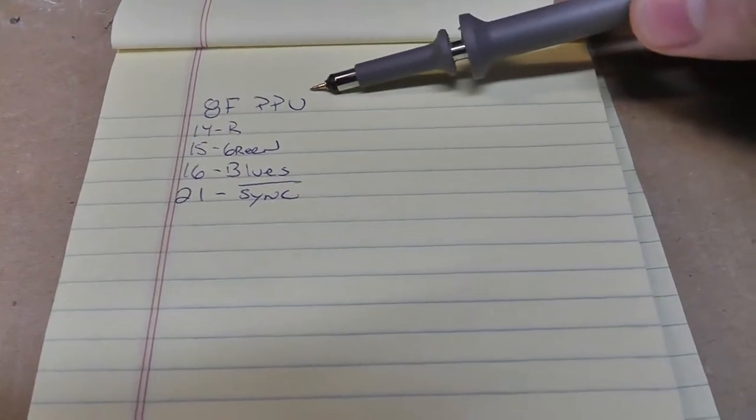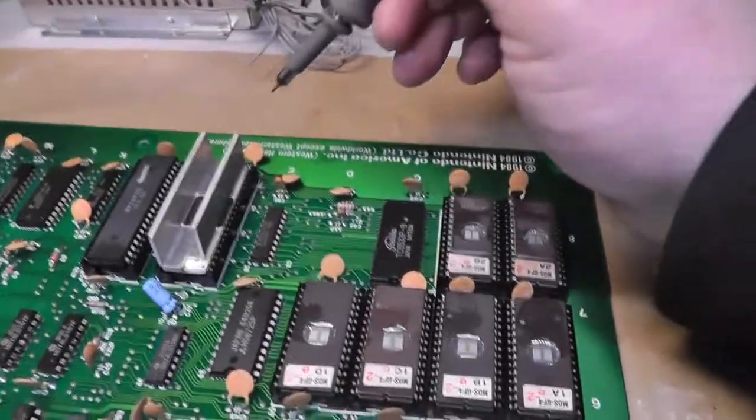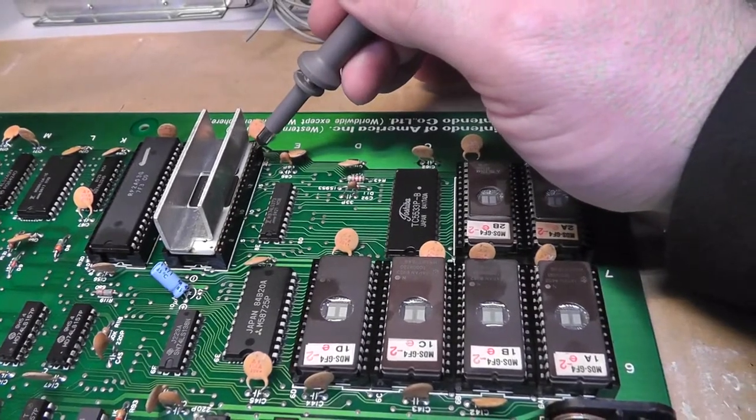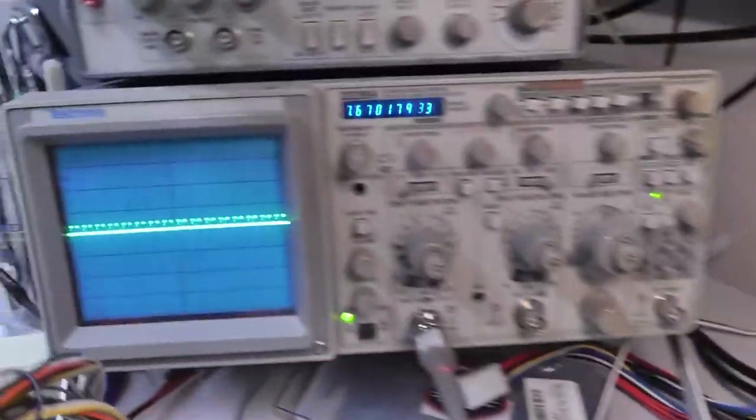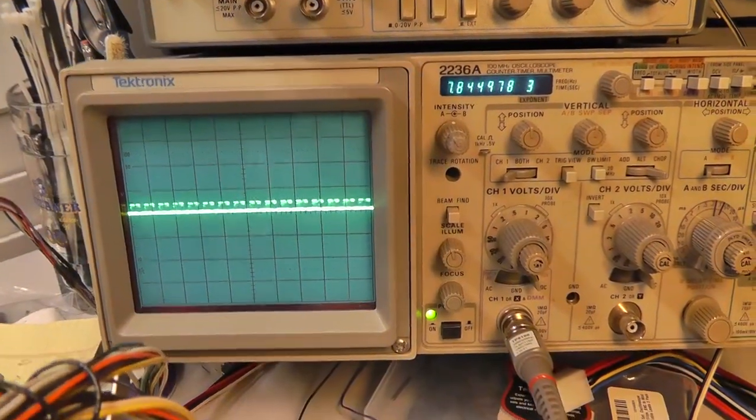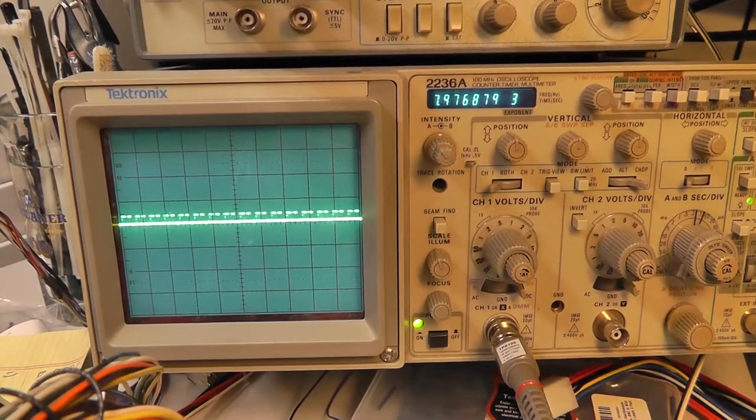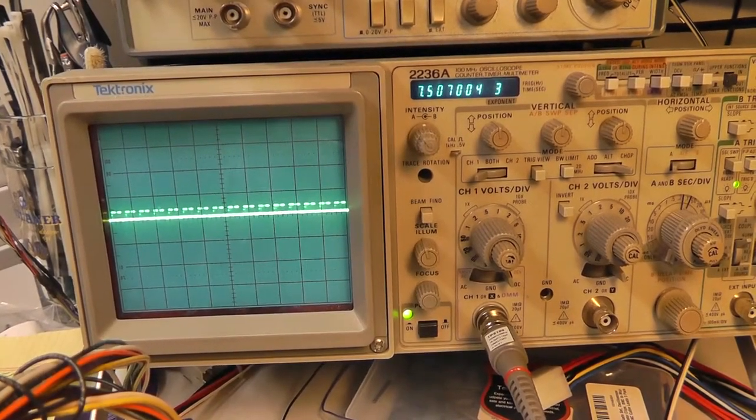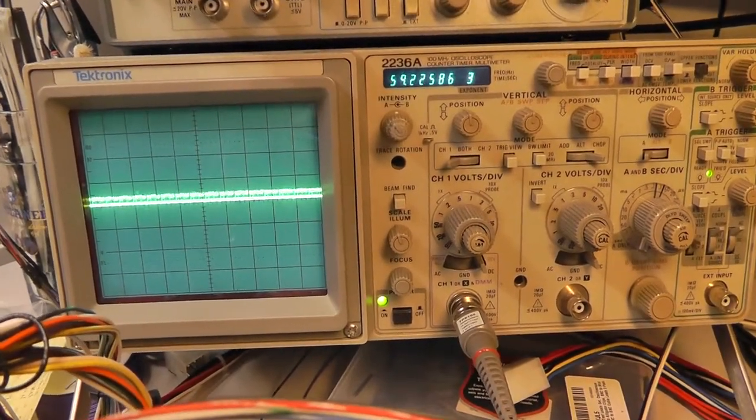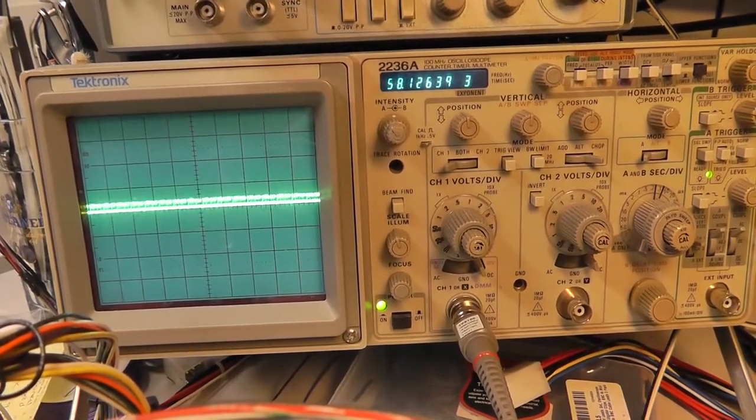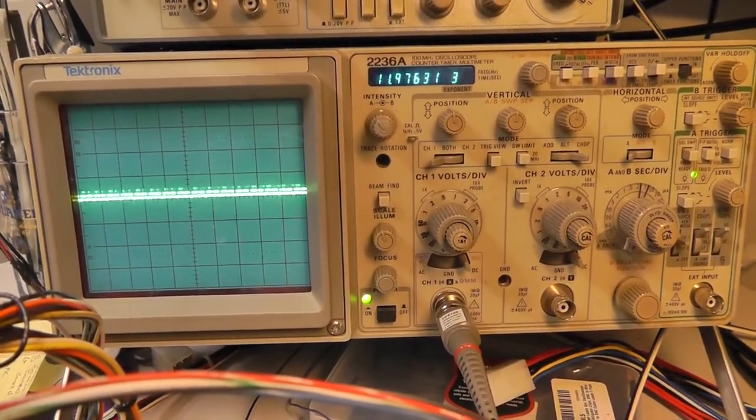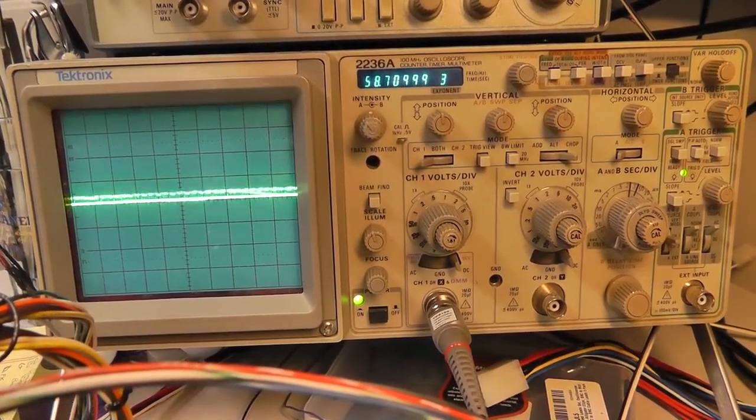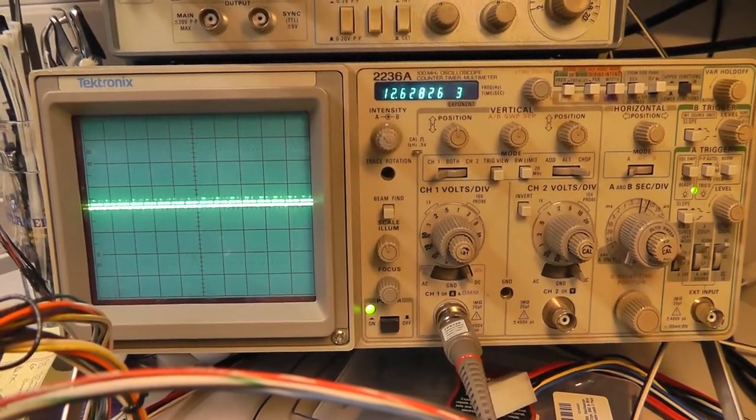Let me get the schematic out. Okay, so we're going to look at 8F, the PPU. 14 is red. 15 is green. 16 is blue. And 21 is some type of sync signal. That's 20, 19, 18, 17, 16. That's what you get, basically barely a volt peak to peak right there. And the frequency is obviously changing. And that's 15, which is green. And then that's blue. I mean, that's red, which does look somewhat different. Or does it? There's activity, so I assume it looks okay.